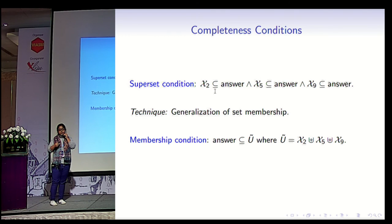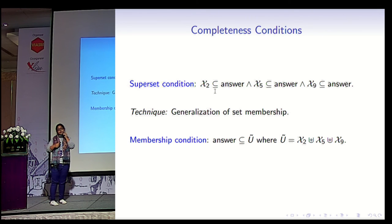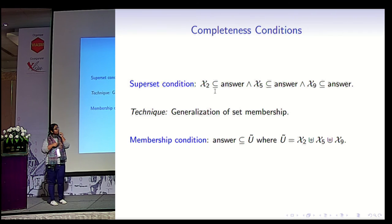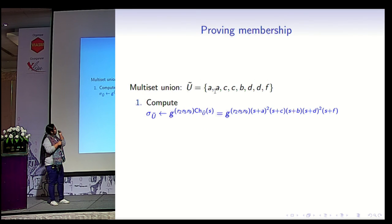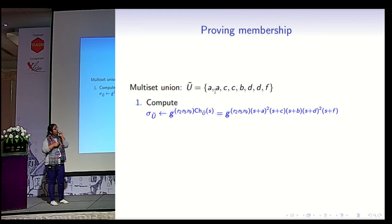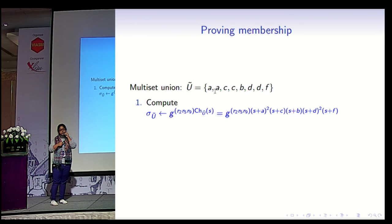We have to hide which set each element came from for perfect simulability. We devised a new technique: instead, prove that the answer is a subset of the multi-set union of the sets, and prove that without giving out the multi-set union itself. The multi-set union is basically the union but all elements preserve their multiplicity. In our running example, the regular union was {a, b, c, d, f}, but the multi-set union has two a's, two d's, and so on. The server first proves that it has correctly computed the accumulation sigma of the multi-set union, and then proves that the answer is a subset of it.